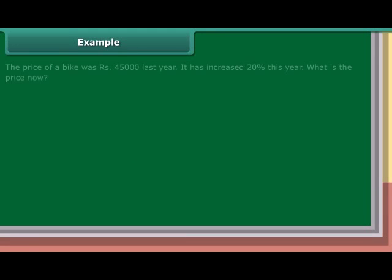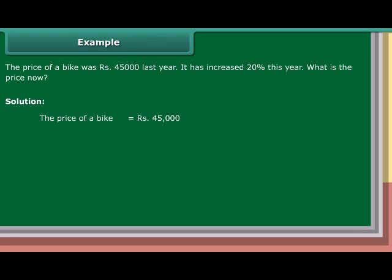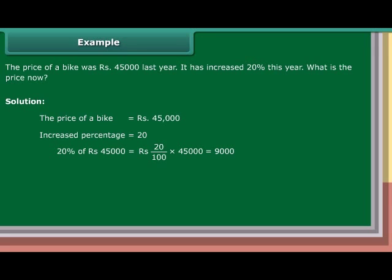Example: The price of a bike was Rs. 45,000 last year. It has increased by 20% this year. What is the price now? Solution: Price of bike = Rs. 45,000. Increased percentage = 20%. 20% of Rs. 45,000 = 20/100 × Rs. 45,000 = Rs. 9,000. New price = Rs. 45,000 + Rs. 9,000 = Rs. 54,000.